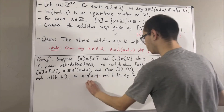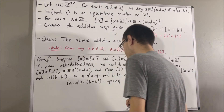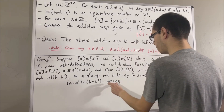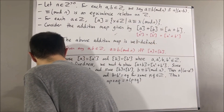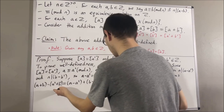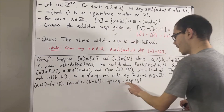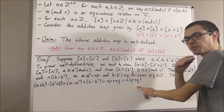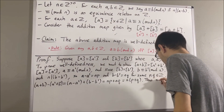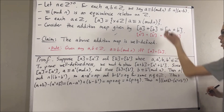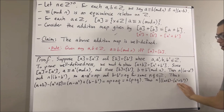Now we're going to take these two equations and add them together. If we do so, on the right-hand side we can factor out n, and on the left-hand side, if we regroup these terms, we get that a plus b minus a prime plus b prime is equal to n times some integer. And that's precisely what it means for n to divide a plus b minus a prime plus b prime. By definition of congruence modulo n, this means that a plus b is congruent to a prime plus b prime modulo n.